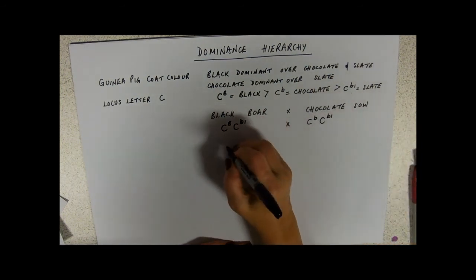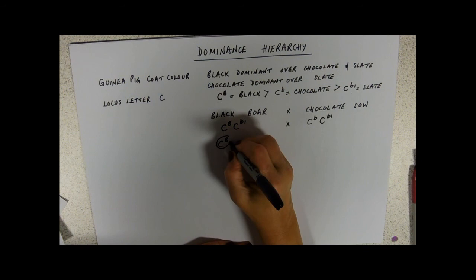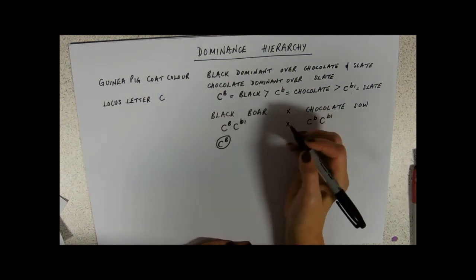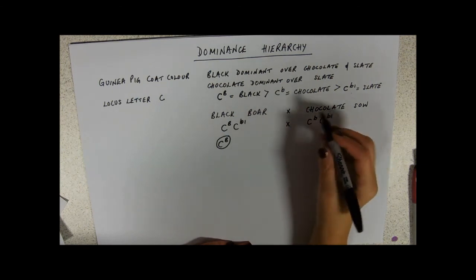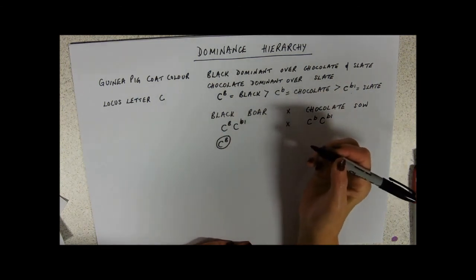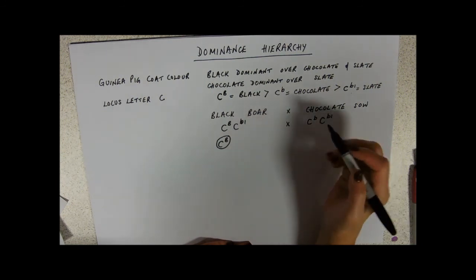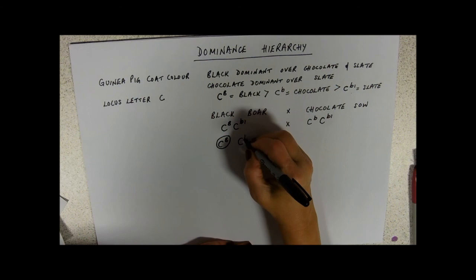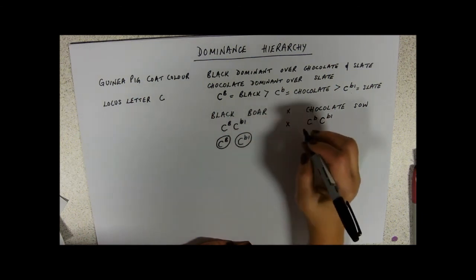So, gametes produced. Our black boar is producing C B, big B gametes. Notice I'm not needing to put X and Y chromosomes in here. This has nothing to do with sex linkage. They're just telling me that it's a male animal crossed with a female animal. That's all that that is telling me. If they want you to do something jolly with sex linkage, they'll tell you about it, fear not.